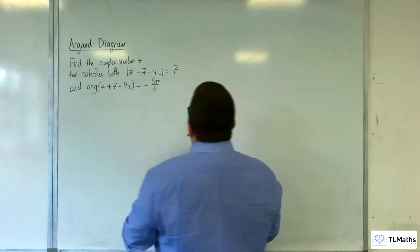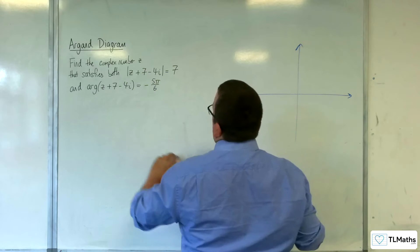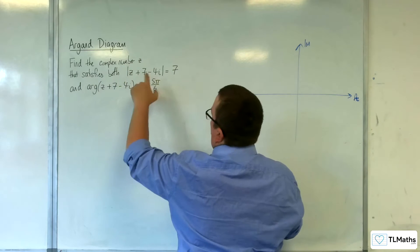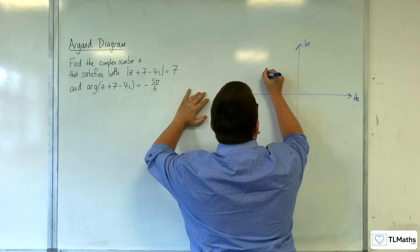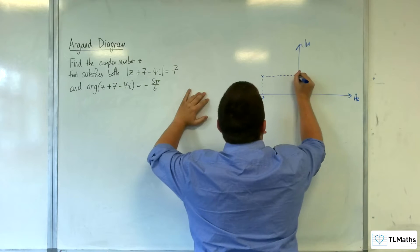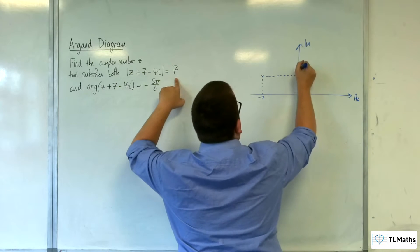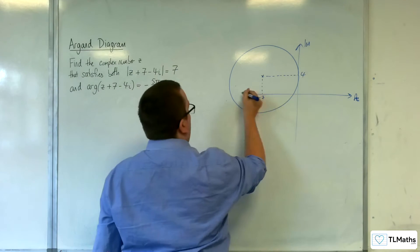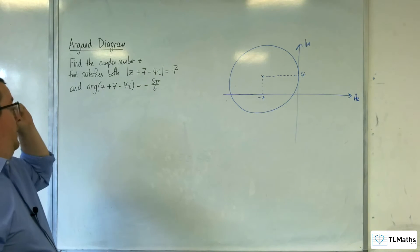Let's draw a quick diagram so we can visualise what's going on here. Here's our real axis and our imaginary axis. We've got this circle centred at (-7, 4), and it's got a radius of 7, so the circle looks something like this.